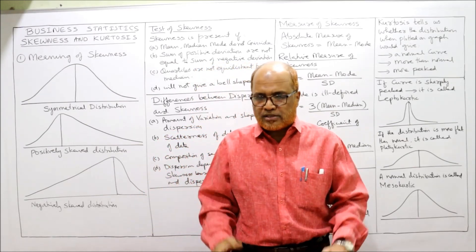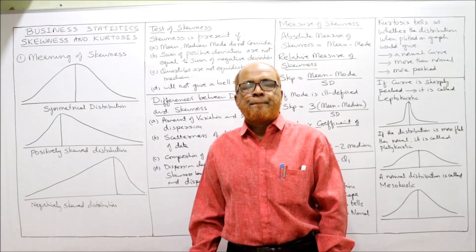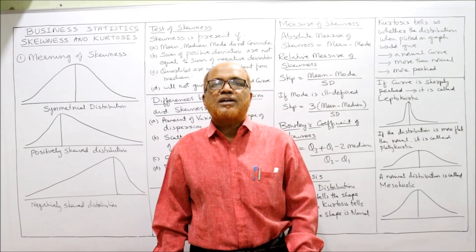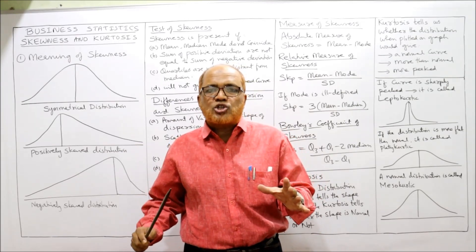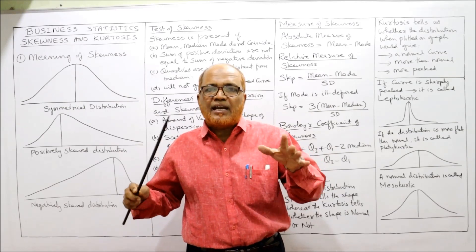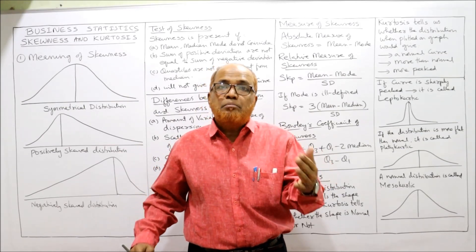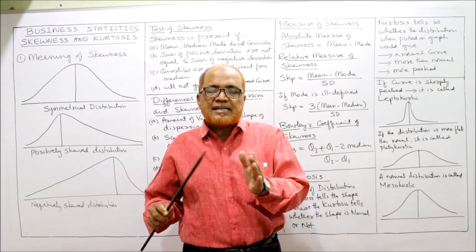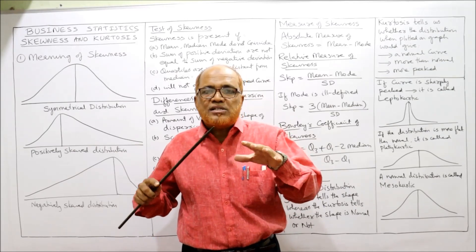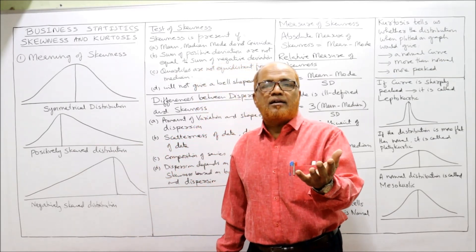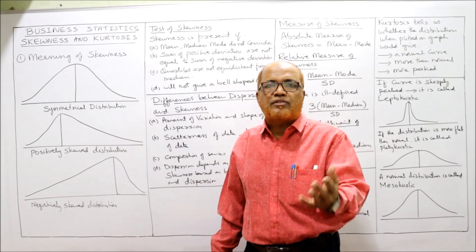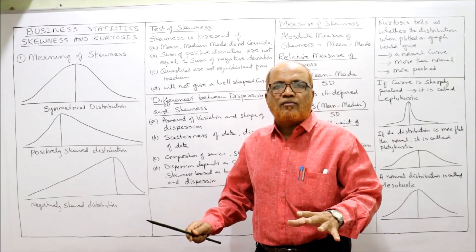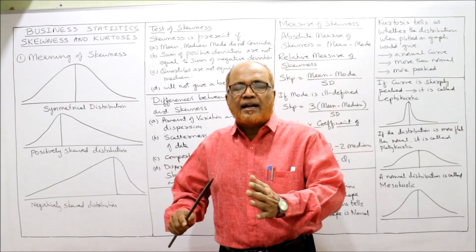What is the meaning of the term skewness? Skewness is a statistical technique which explains the shape of the distribution. The shape of the distribution means when we draw a graph, whether it is a normal curve or symmetric curve — that is, what is the shape of the statistical data when it is collected. To explain the shape of the distribution, we apply the technique called skewness.